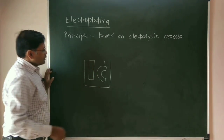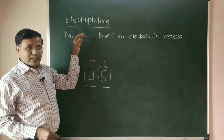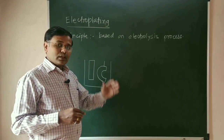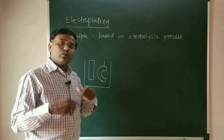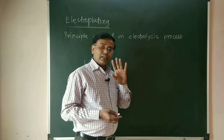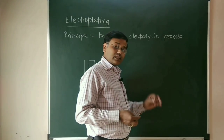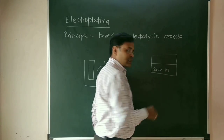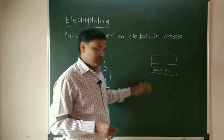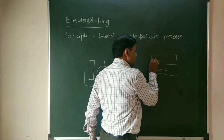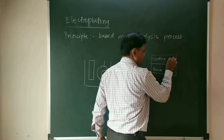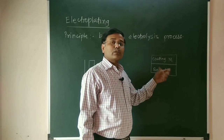Remember that electroplating is a type of metallic coating. Metallic coating means a coating of one metal over another metal. This base metal is the one on which we are giving the coating, while the upper metal whose coating is given is called the coating metal. The base metal is also called the coated metal.